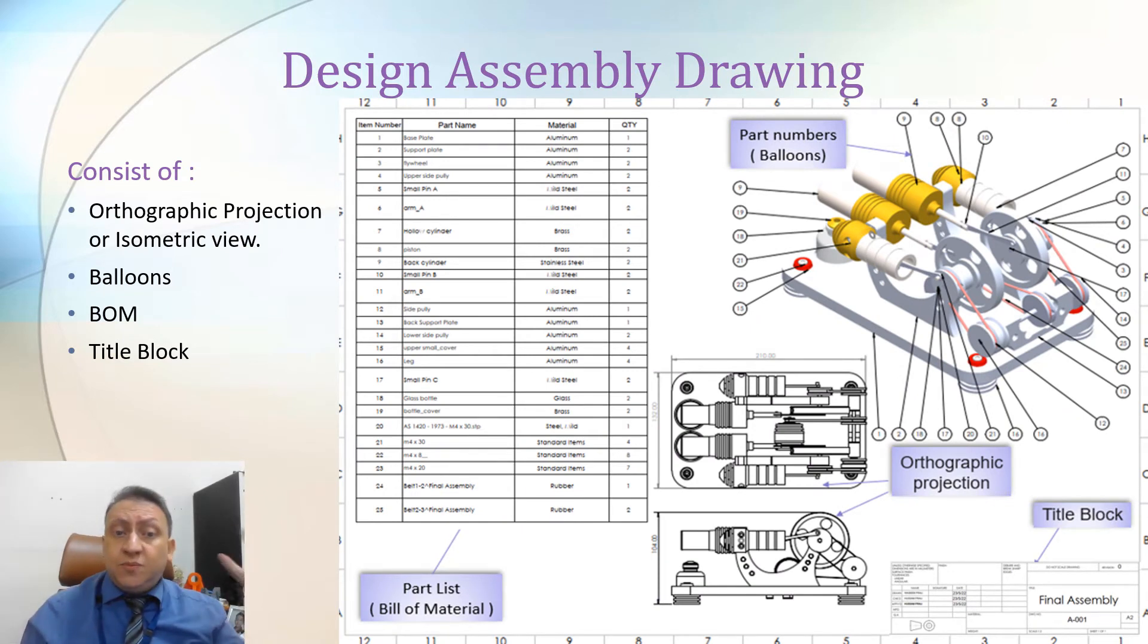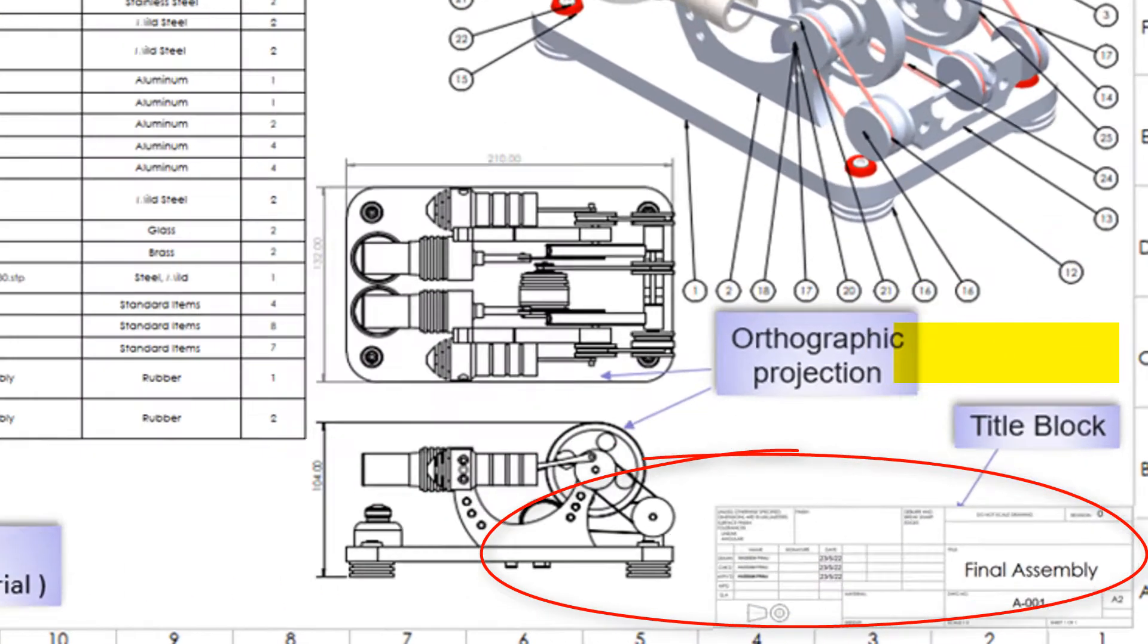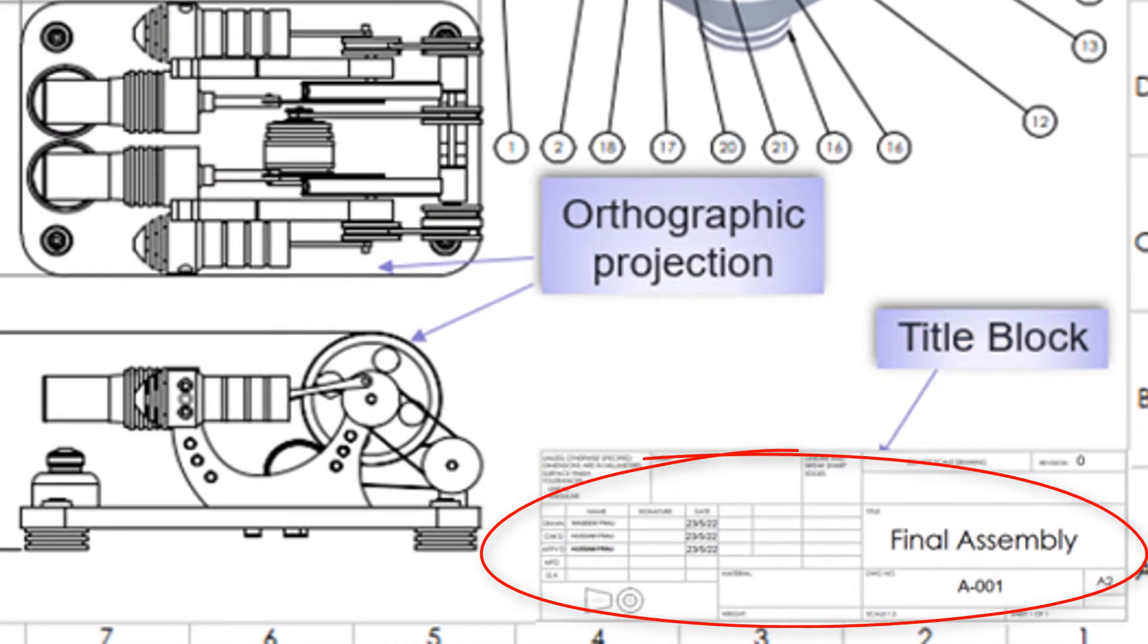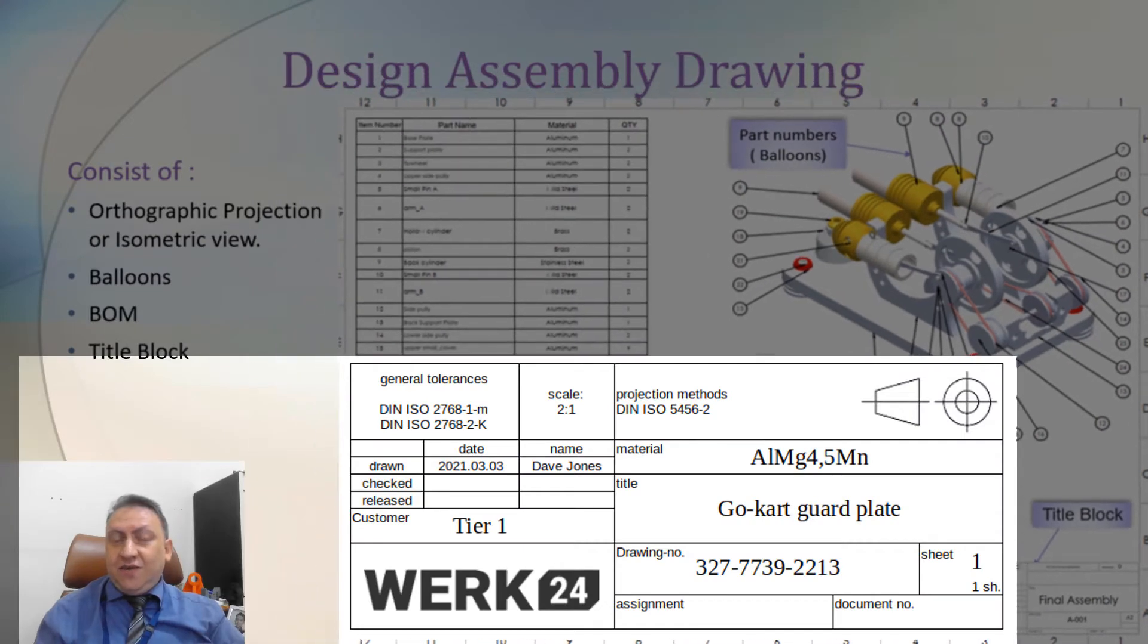And of course, bill of material is customizable. You can change the column, and you can add to it or remove from it. So the last element of engineering drawing is the title block, which is in this corner here, in this area. The title block contain information about the drawing itself: what's the drawing name, what's the company name, what's the drawing number, what's the revision, scale, sheet one of one, or who created the drawing, which standard we are using, third angle or first angle of projection.